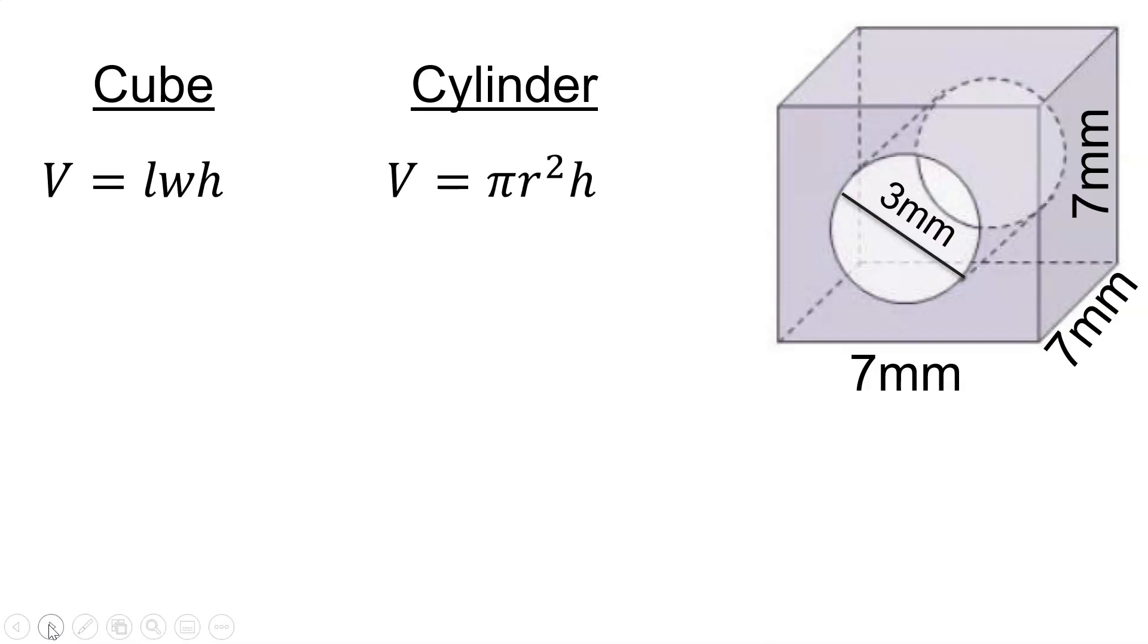To find the volume of the cube we would use the formula volume equals length times width times height or the formula v equals side cubed. Since the side is 7 millimeters, the volume of the cube is 7 cubed or 343 cubic millimeters.